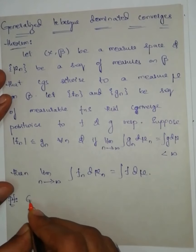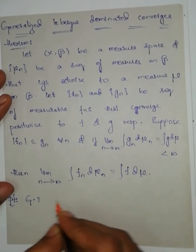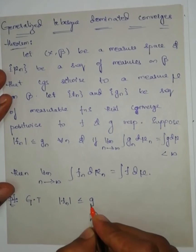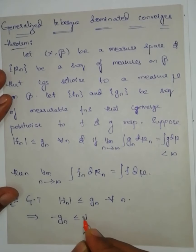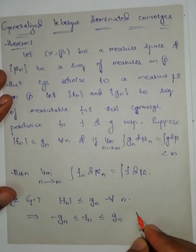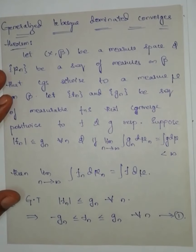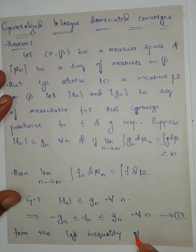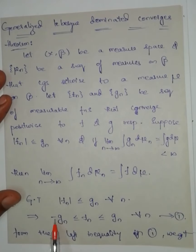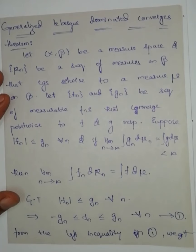Proof. Given that |f_n| ≤ g_n for all n. From this we can write: -g_n ≤ f_n ≤ g_n for all n. Let us call this equation number 1. From the left inequality of equation number 1, we get: -g_n ≤ f_n, that is, 0 ≤ f_n + g_n.